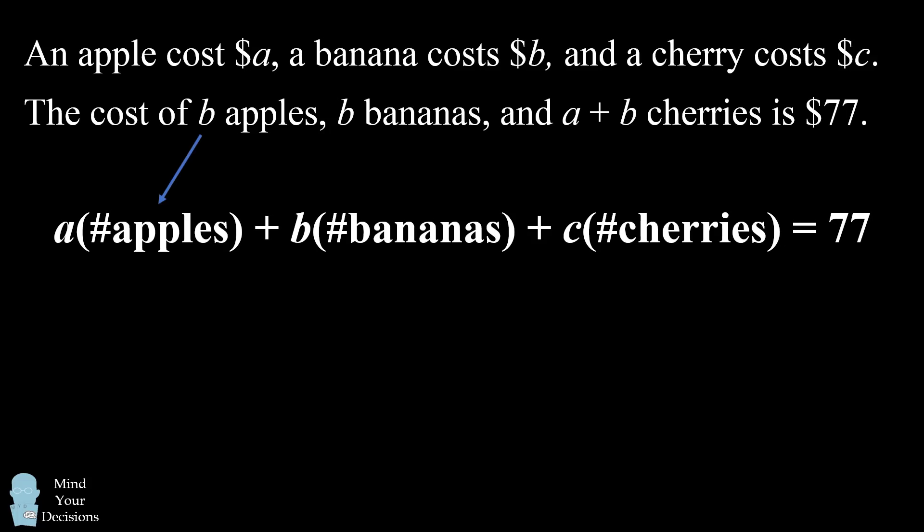Now we know we have B apples, B bananas, and A plus B cherries. So we can substitute in those values.